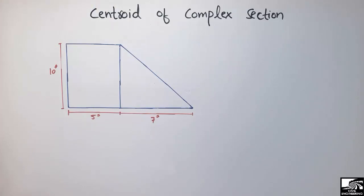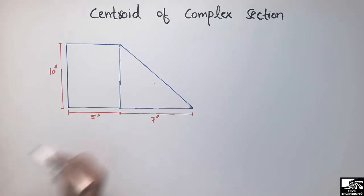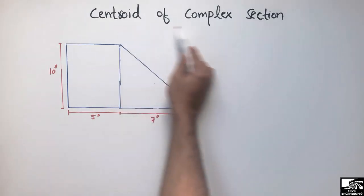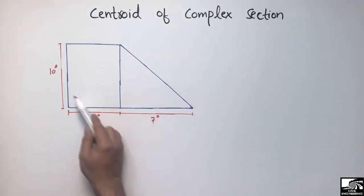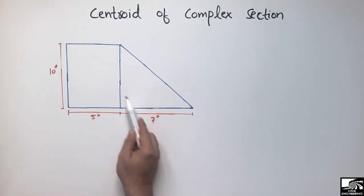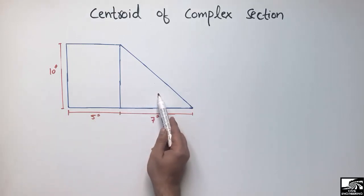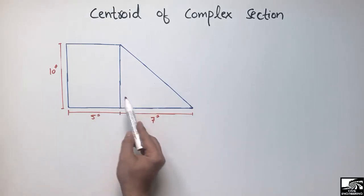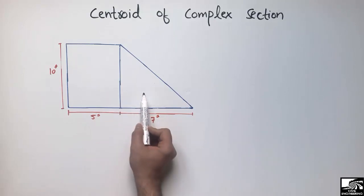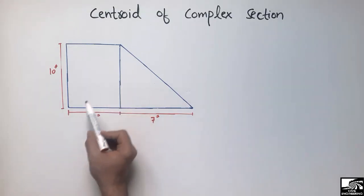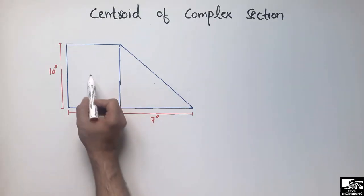Hello guys, welcome back to the Civil Engineering YouTube channel. Please subscribe for daily civil engineering videos. Today our lecture is about finding the centroid of a complex section. Here we have a rectangle combined together with a triangle, and we want to find the combined centroid of this shape.